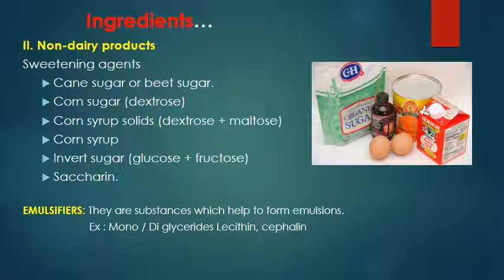The second category is non-dairy products. First, sweetening agents: cane sugar or beet sugar, corn sugar containing dextrose, corn syrup solids containing both dextrose and maltose, corn syrup, invert sugar containing glucose and fructose, and artificial sweeteners like saccharin. Then there are emulsifiers — substances which help form emulsions — such as mono- or diglycerides and lecithin. Lecithin is a major source obtained from egg yolk, and another is cephalin. These are phospholipids and natural emulsifying agents present in egg yolk.